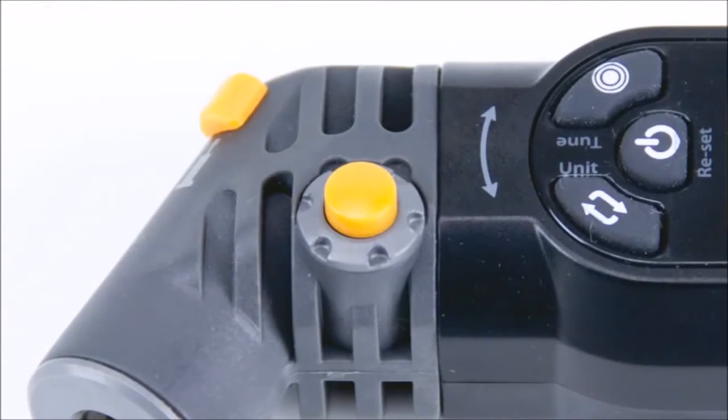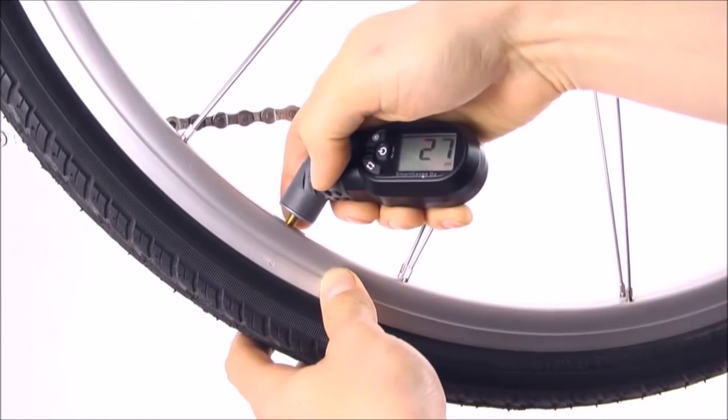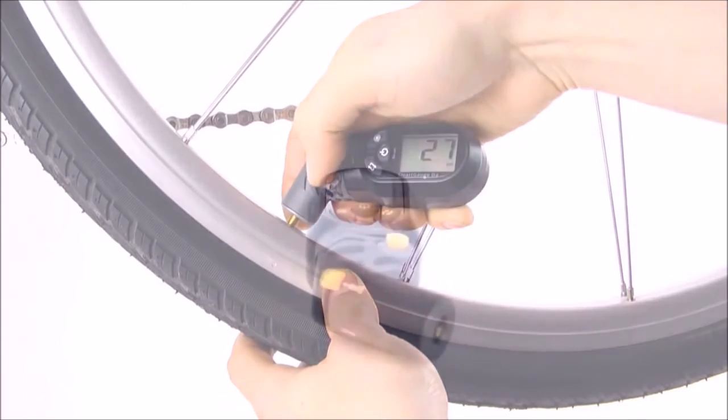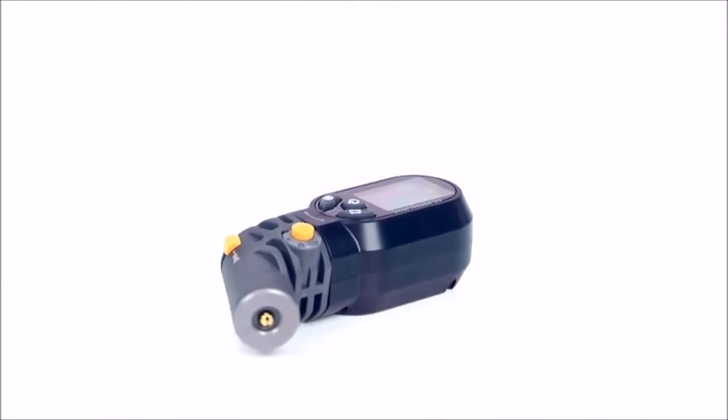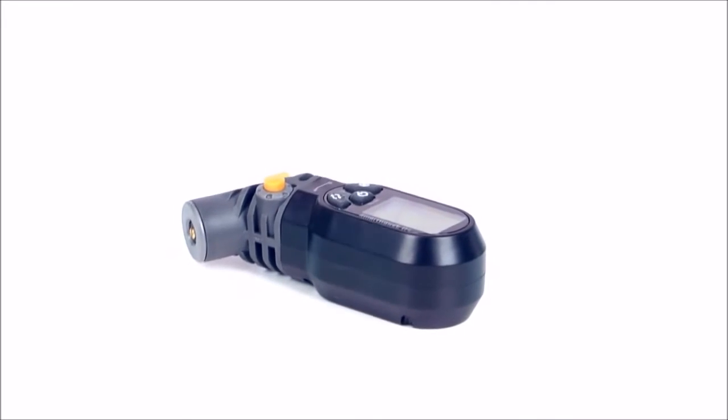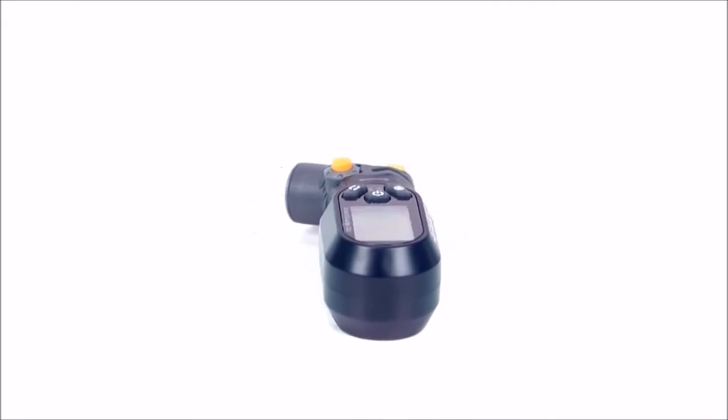The Smart Gauge D2 also has an air release button for accurate pressure adjustments. The Topeak Smart Gauge D2 is a precision digital pressure gauge to keep your tires, shock, and fork perfectly dialed in.